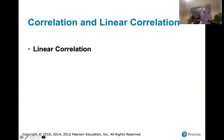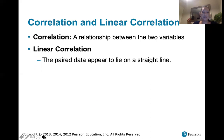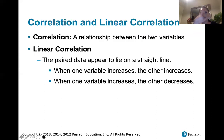Not all correlations are linear — we can have correlations that exhibit different patterns, such as quadratic, exponential, or polynomial. But here we're talking about a linear correlation. If a correlation is a relationship between variables, a linear correlation is a linear relationship between variables: the paired data appear to lie on or near a straight line. When one variable increases and the other increases, the line has a positive slope — it goes up from left to right. If as one variable increases the other decreases, the line has a negative slope — it goes down from left to right.